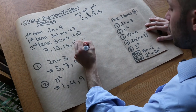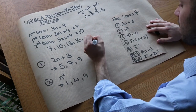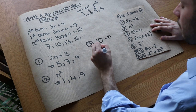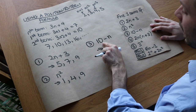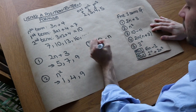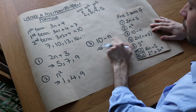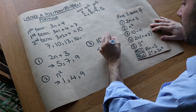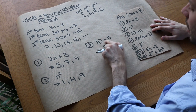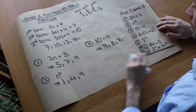Now we have the formula 10 minus n. The first term is 10 minus 1, which is 9. The second term is 10 minus 2, which is 8. The third term is 10 minus 3, which is 7, and so on.